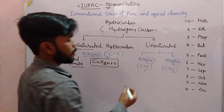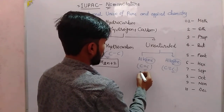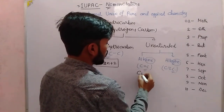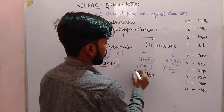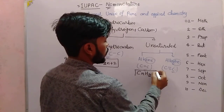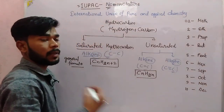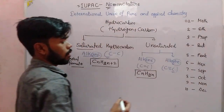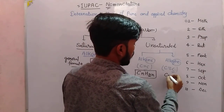Next — the general formula: CₙH₂ₙ. Okay, 2N. Yes — what is it? CₙH₂ₙ — this is the general formula for alkene.